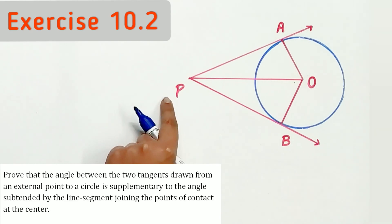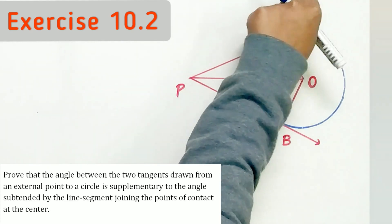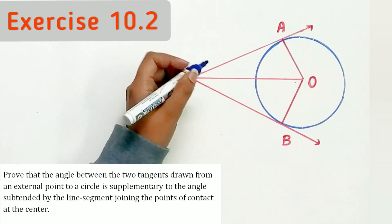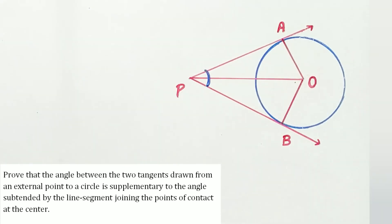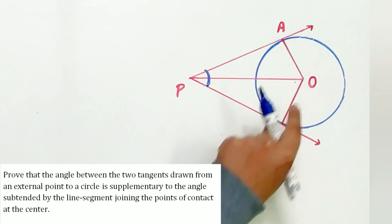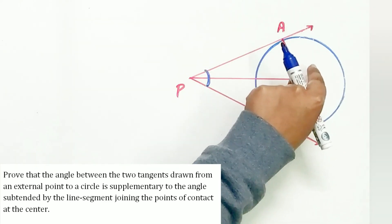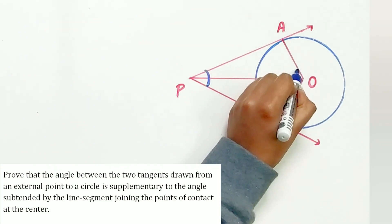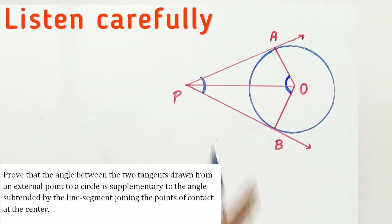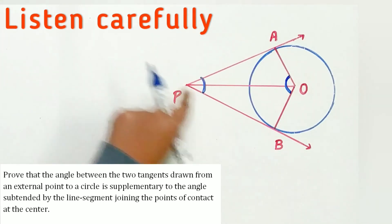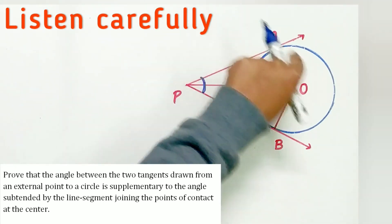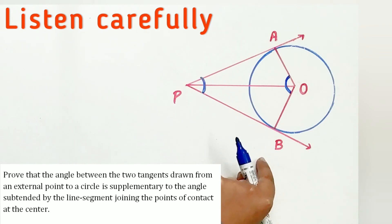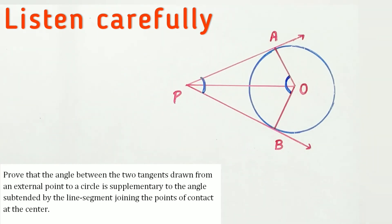Drawn from an external point to a circle is supplementary to the angle subtended by the line segment joining the points of contact at the center. Hence, we have to prove that angle APB plus angle AOB is equal to 180 degrees.